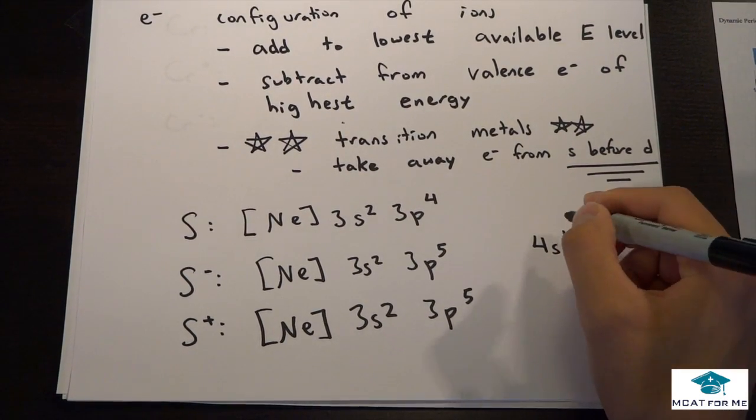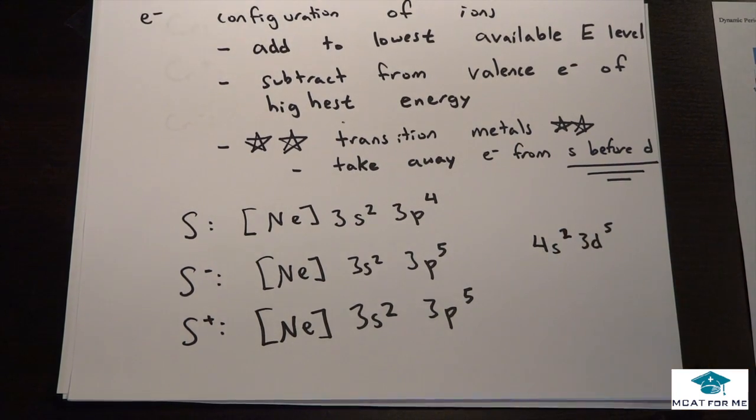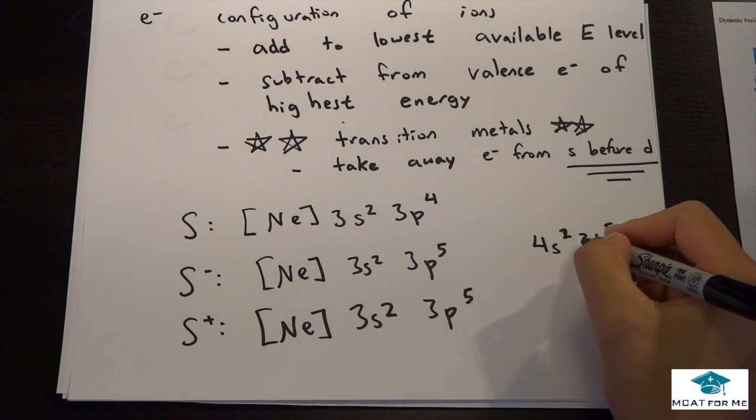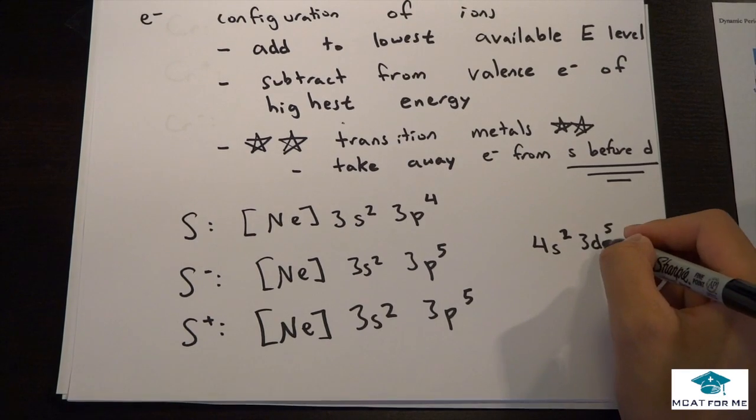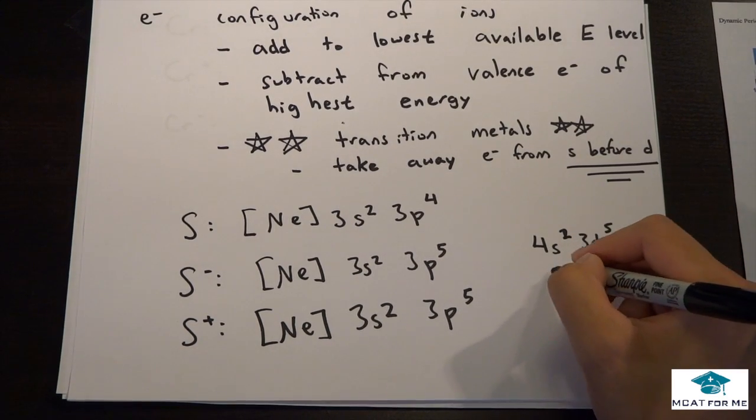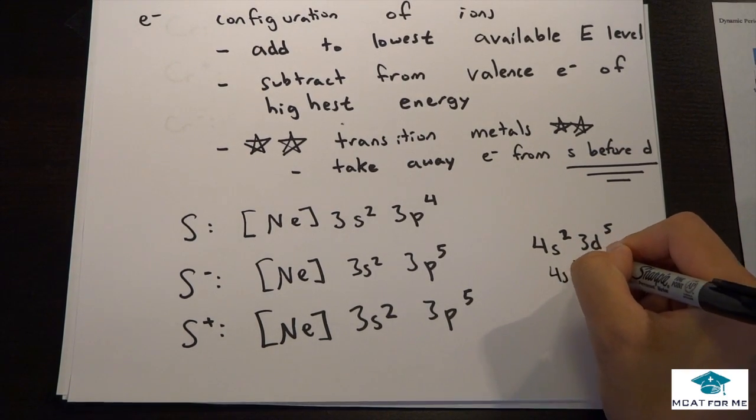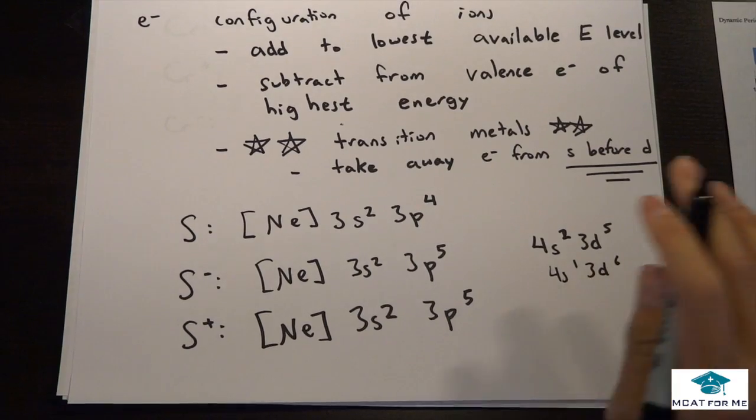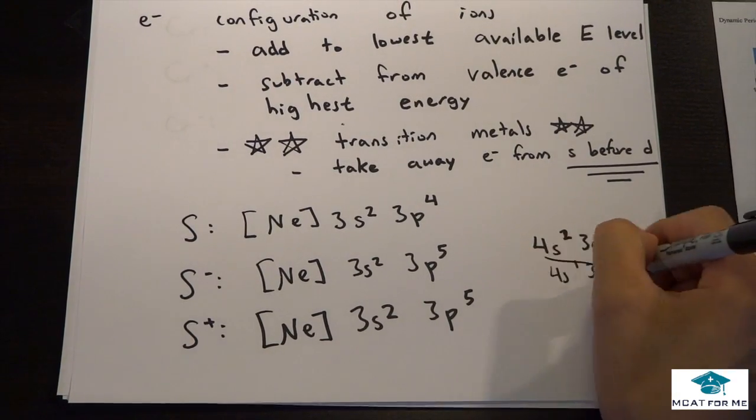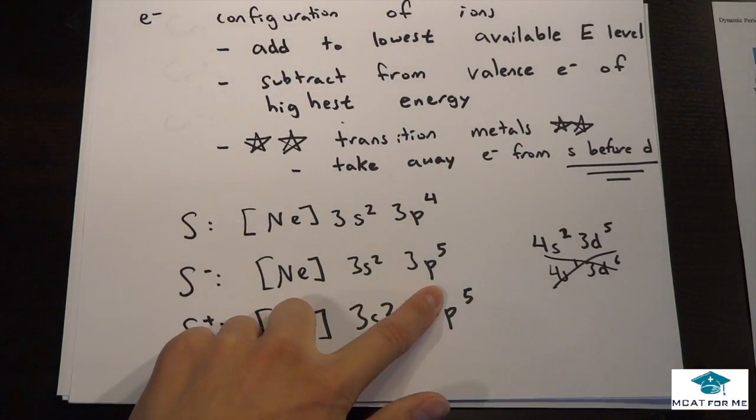4s¹ 3d⁵, we're going to want to add one electron to the lower energy level of 4s¹ rather than 3d⁵. So it would be 4s² rather than 4s¹ 3d⁶. This would be wrong, but just to make it clear.